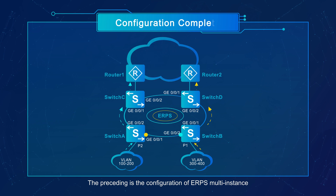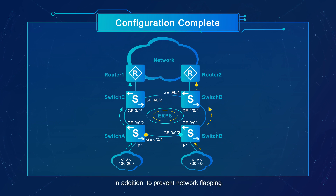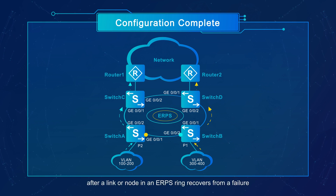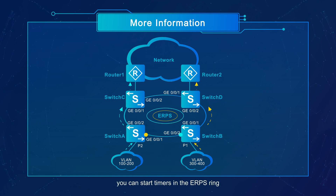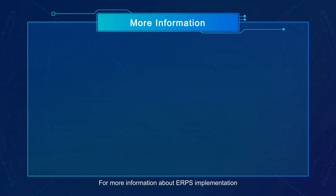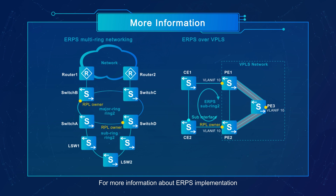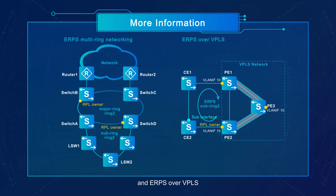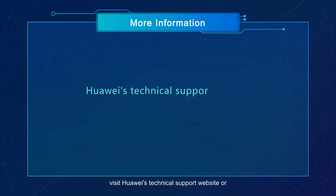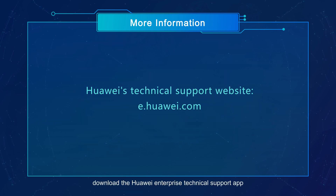The preceding steps cover the configuration of ERPS multi-instance. In addition, to prevent network flapping and reduce traffic interruptions after a link or node in an ERPS ring recovers from a failure, you can start timers in the ERPS ring. For more information about ERPS implementation and configurations, such as ERPS multi-ring networking and ERPS over VPLS, visit Huawei's technical support website or download the Huawei Enterprise technical support app.